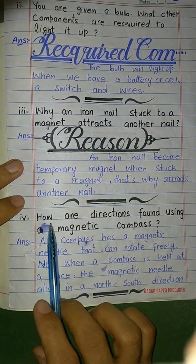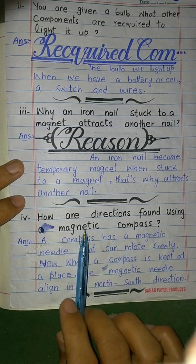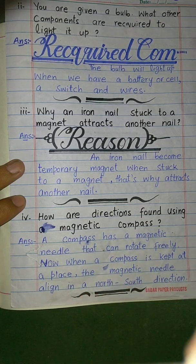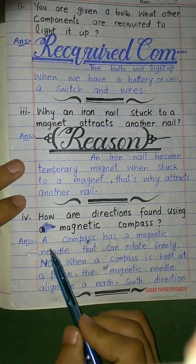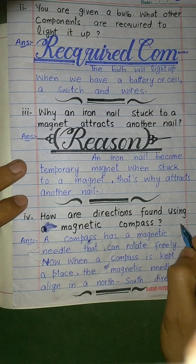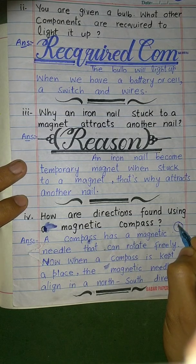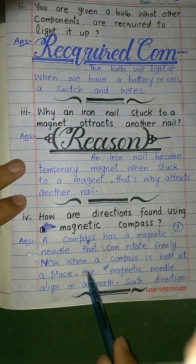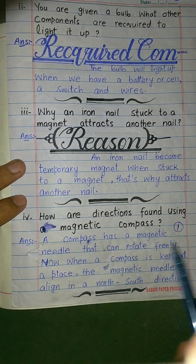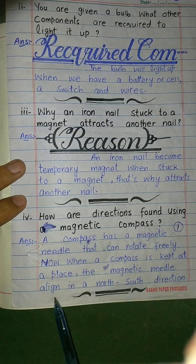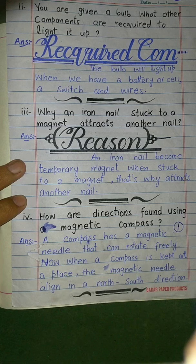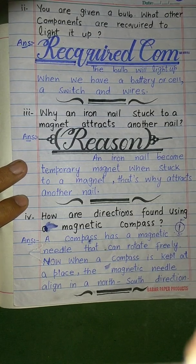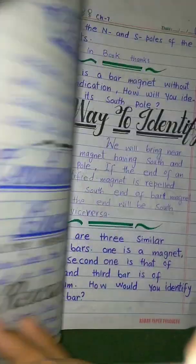How are directions found using a magnetic compass? A compass has a magnetic needle that can rotate freely. When a compass is kept at a place, the magnetic needle aligns itself in the north-south direction. This is how we can find directions using a magnetic compass.